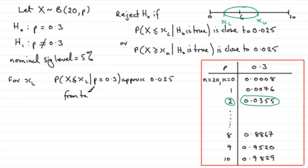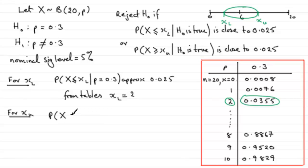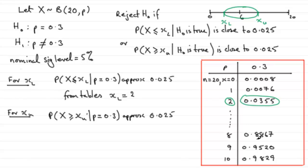Now for the upper critical value XU: the probability of X being greater than or equal to XU, given P equals 0.3, should be approximately 0.025. Since our tables give cumulative probabilities (less than or equal to), the probability of being below XU must be as close as we can get to 97.5%. This means we look for the probability of X being less than or equal to XU minus 1 being approximately 0.975.